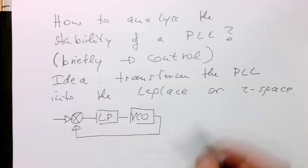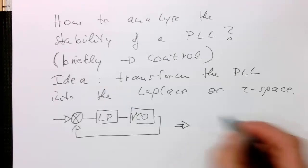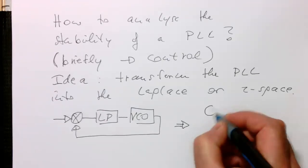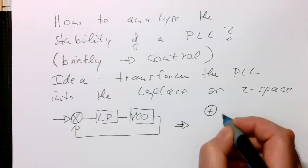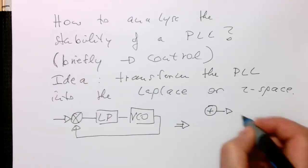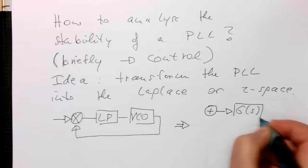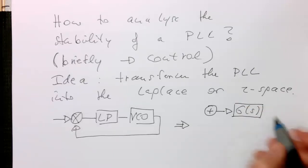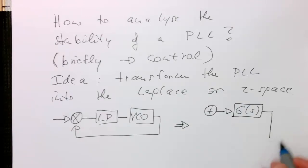We translate this circuit diagram into a diagram which works in this way. So instead of having a multiplier, we're using an adder, and we're finding a filter G(s) in the Laplace space. And then our VCO becomes an integrator.